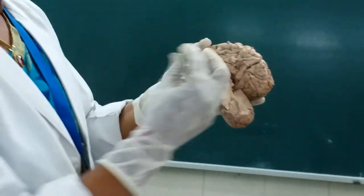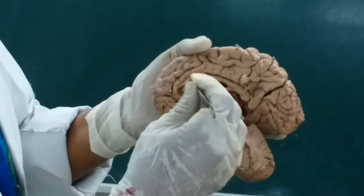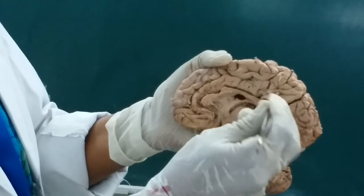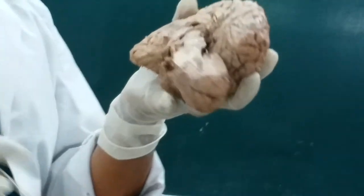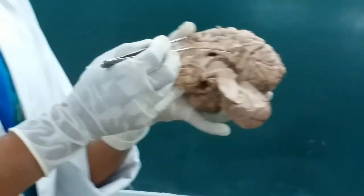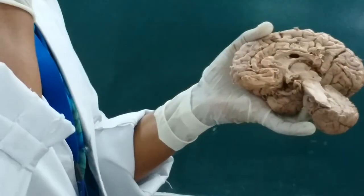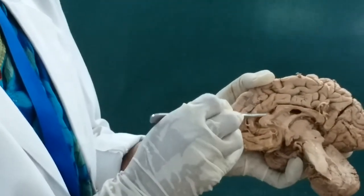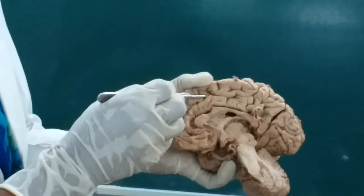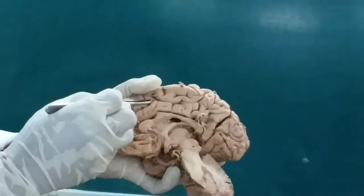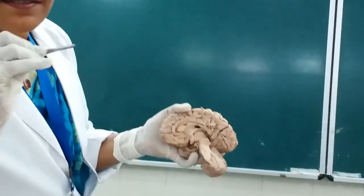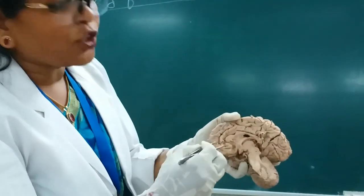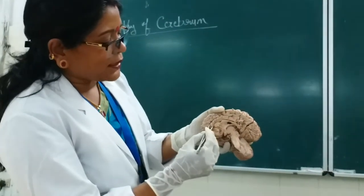So there are two sulci present on the medial surface: the callosal sulcus and the cingulate sulcus. The structure in between these two sulci — the gyrus lying between the callosal sulcus and the cingulate sulcus — is the cingulate gyrus. This is the topography of the cingulate gyrus.